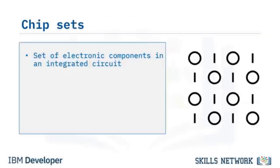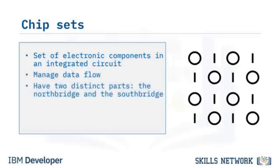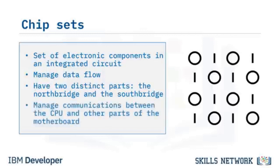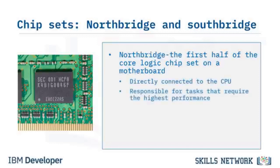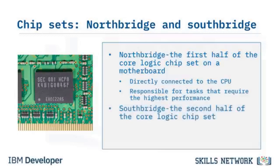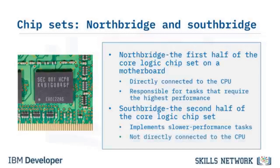A chipset is a set of electronic components in an integrated circuit that manages data flow among the processor, memory, and peripherals. A chipset has two parts: the NorthBridge and the SouthBridge, which manage communications among the CPU and other parts of the motherboard. The NorthBridge chip, or HostBridge, connects directly to the CPU via the front-side bus and performs high-performance tasks. The SouthBridge chip generally implements slower-performance tasks and is usually not directly connected to the CPU.